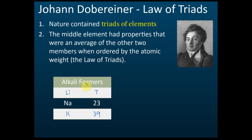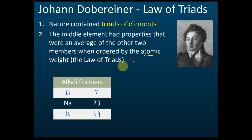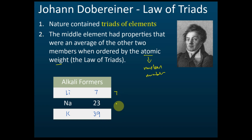According to the Law of Triads, Döbereiner says we can group elements into a triad — a group of three elements. For example, lithium, sodium, and potassium are grouped together. These three elements have similar chemical properties, and the atomic weight of the middle element equals the average of the first and last. So 7 plus 39 equals 46, divided by 2 gives 23.